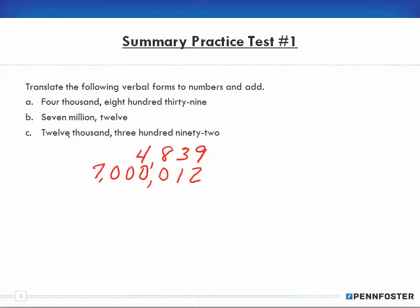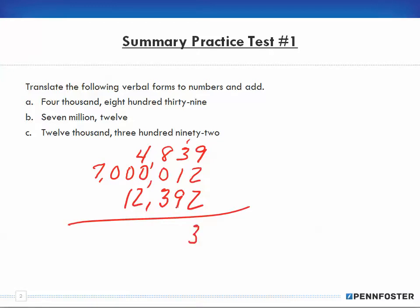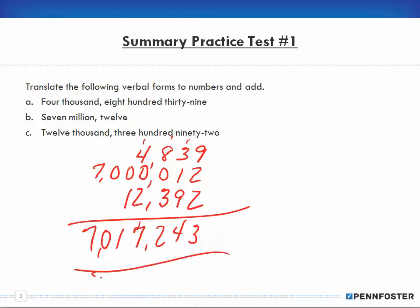C is twelve thousand three hundred and ninety-two, so 12,392. And it tells me to add. Working through the columns, the total comes out to seven million seventeen thousand two hundred and forty-three.